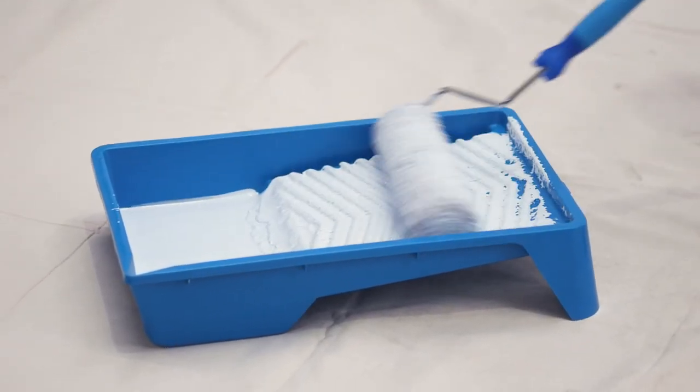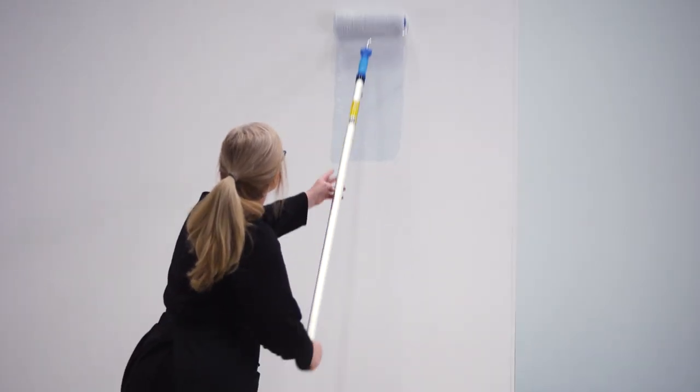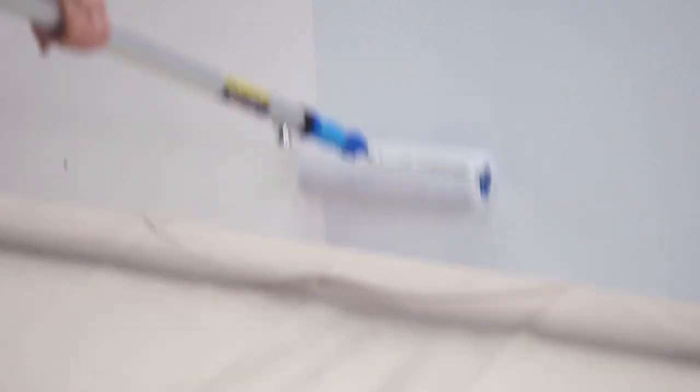Then, simply load the large roller with plenty of product from the tray and work along the wall ensuring that you have an evenly distributed sand texture.